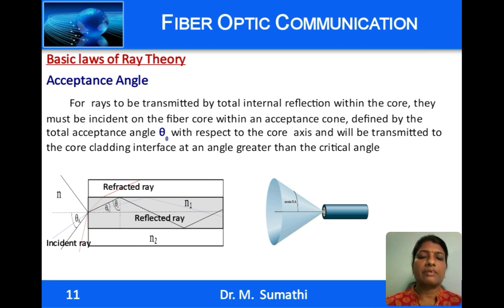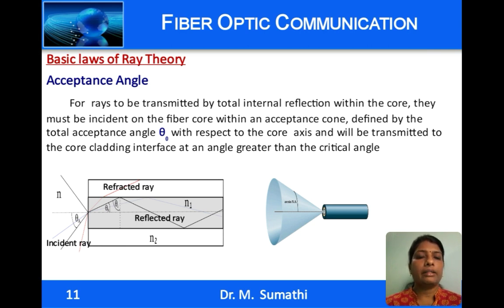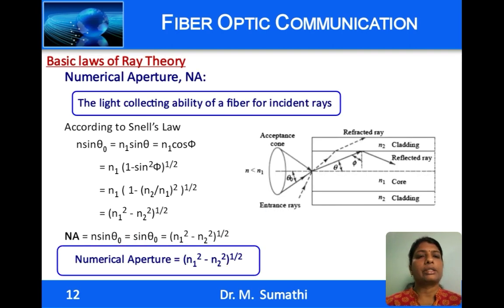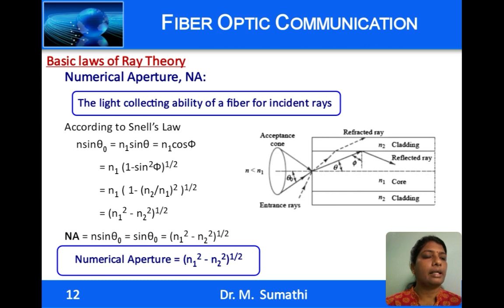If the angle of incidence at the core surface is greater than θ₀ (the acceptance angle), as indicated by the red ray, then the ray gets refracted into the cladding. This acceptance angle, viewed in 360°, gives the acceptance cone. Numerical aperture of a fiber is the light collecting ability of the fiber. When light falls at the core-air interface at an angle less than θ₀, it makes an angle greater than θc at the core-cladding interface inside the fiber and propagates by total internal reflection.